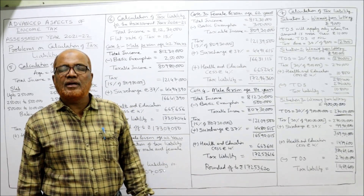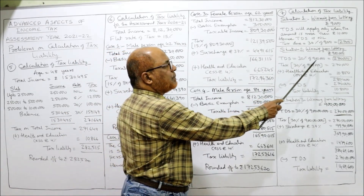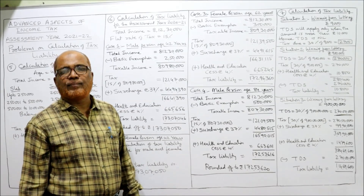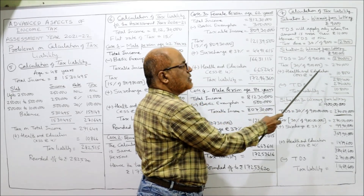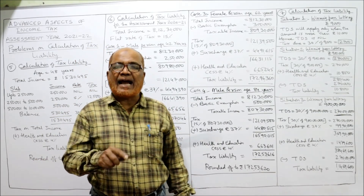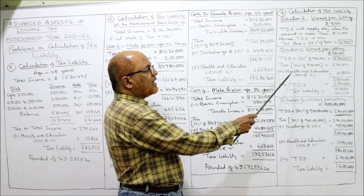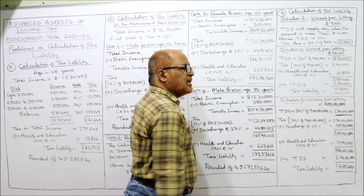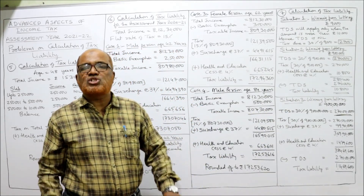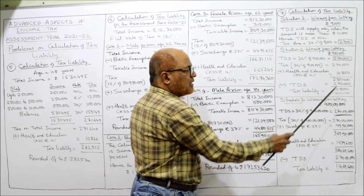Situation 2: winning from lottery is nine lakh rupees. It is more than ten thousand, so TDS will be applied at thirty percent. TDS equals thirty percent of nine lakh — two lakh seventy thousand is the tax deducted at source. Tax liability: thirty percent of nine lakh is two lakh seventy thousand. No surcharge since winnings are less than fifty lakh. Add health and education cess four percent: four percent of two lakh seventy thousand gives ten thousand eight hundred. Total tax is two lakh eighty thousand four hundred. Deduct TDS of two lakh seventy thousand already deducted; remaining tax due is ten thousand eight hundred.